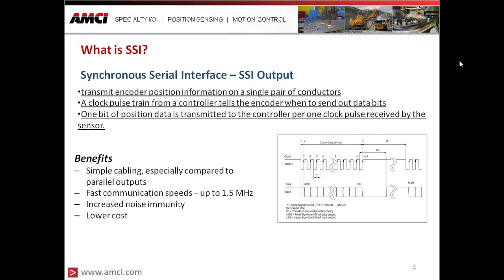With a traditional parallel type encoder, your fastest update rate may be around 50 kilohertz or maybe every 10 milliseconds — very slow. With SSI, we can clock that sensor at frequencies up to 1.5 megahertz, getting that position data very quickly and transmitting it to the controller at a very fast rate. And because the signal is differential, it increases noise immunity.